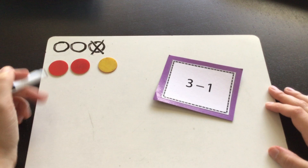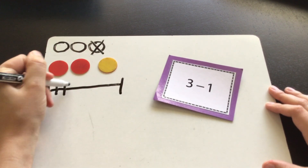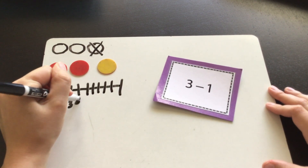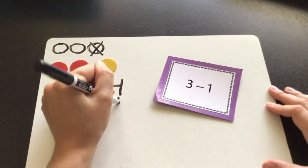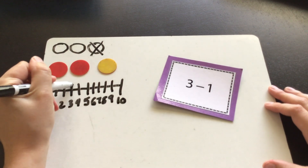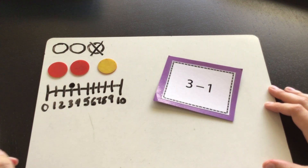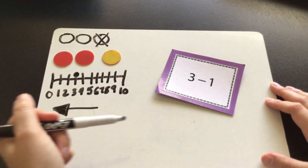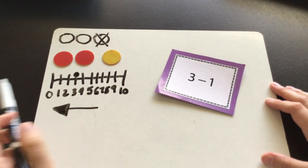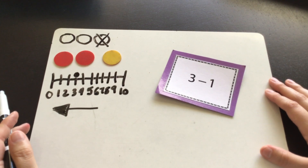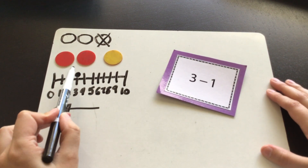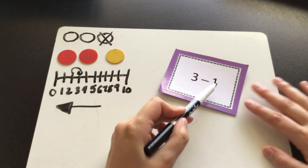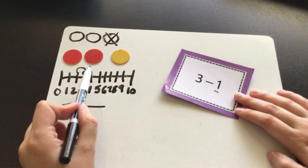If I'm doing subtraction on a number line, I start at the first number, just like with addition — start at that first number, three. But then with subtraction, I move in the opposite direction. The reading direction is this way, but when I subtract, I go that way. When we subtract, we're getting closer to zero. So we're making hops backwards on the number line, closer to zero. We start at three and we take one hop backwards, because the second number tells us how many hops.